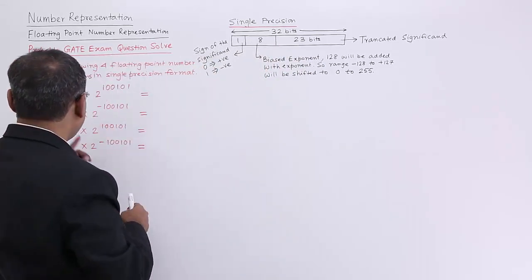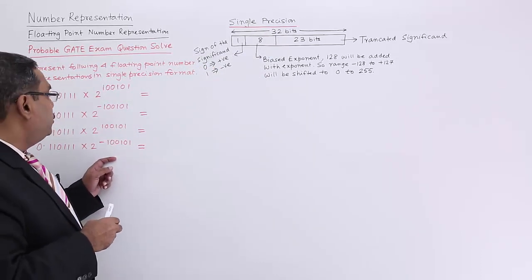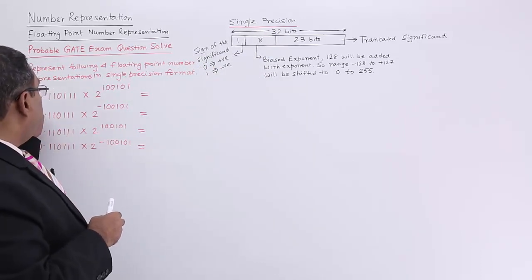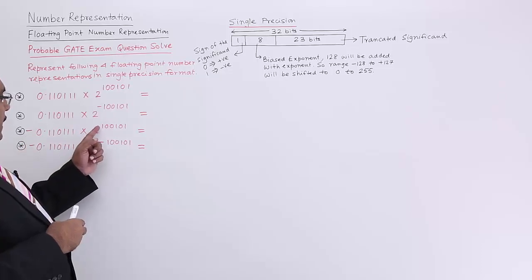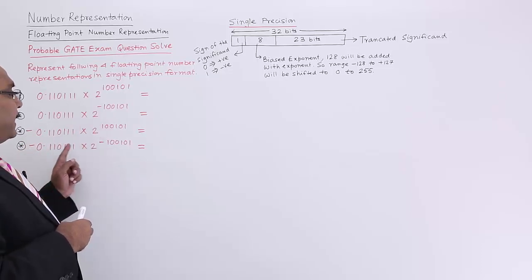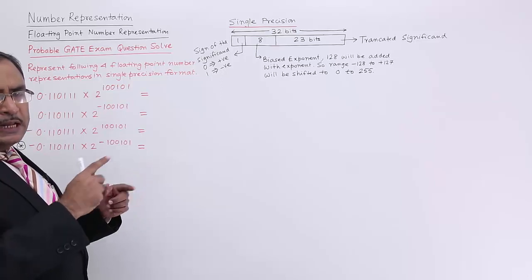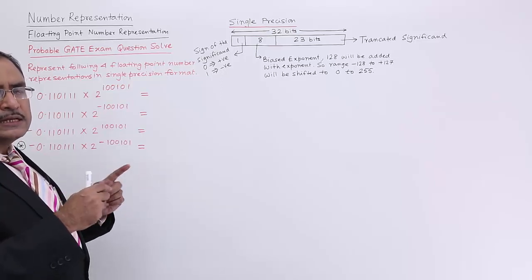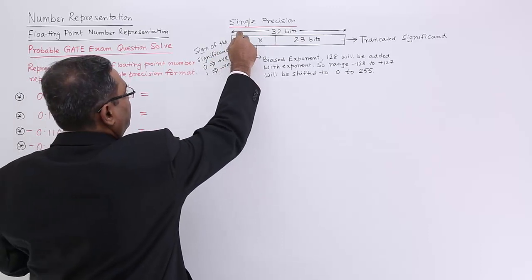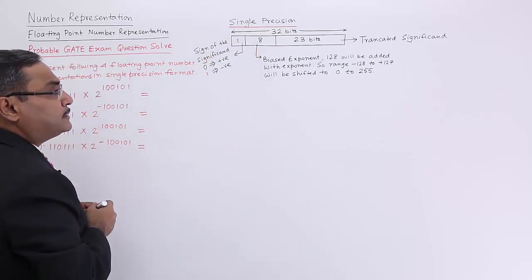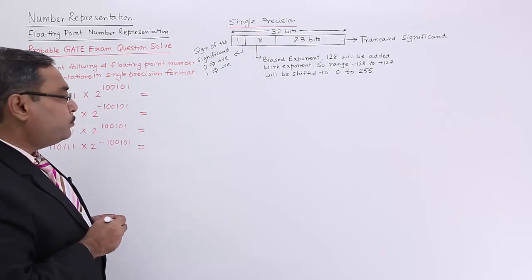These are the 4 formats they have given. We have plus-plus, plus-minus, minus-plus, and minus-minus — the same number but with all combinations of positive and negative sign for the significand and exponent. Now, for the first field, the sign for the significand: positive means 0 and negative means 1.